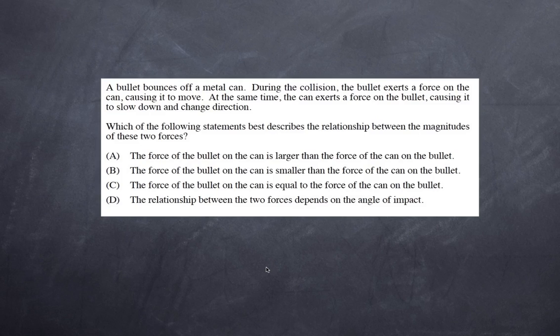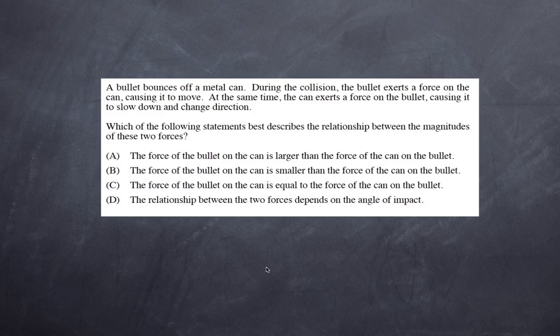The first question: a bullet bounces off a metal can and during the collision the bullet exerts a force on the can causing it to move. At the same time the can exerts a force on the bullet causing it to slow down and change direction. Which of the following statements best describes the relationship between the magnitudes of these forces? Is it: A) the force of the bullet on the can is larger than the force of the can on the bullet; B) the force of the bullet on the can is smaller than the force of the can on the bullet; C) the force of the bullet on the can is equal to the force of the can on the bullet?